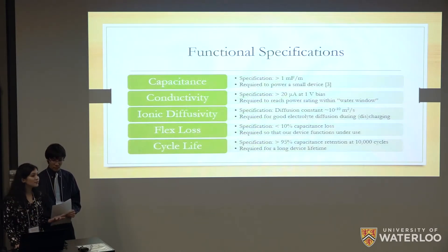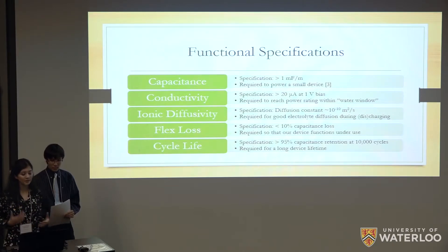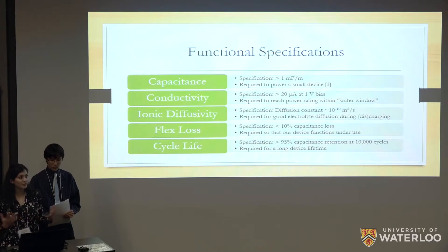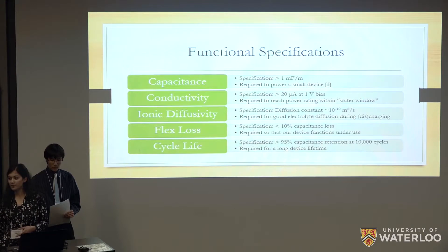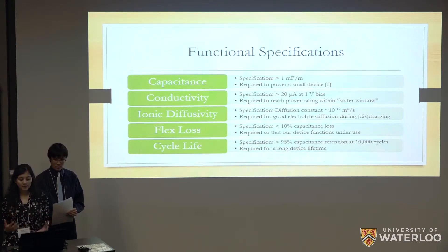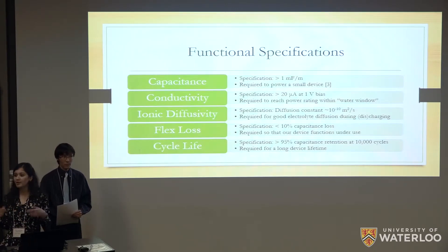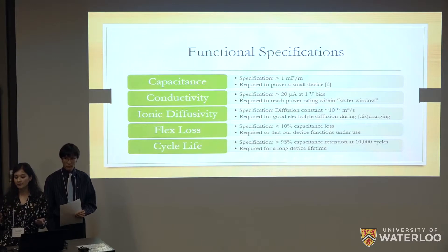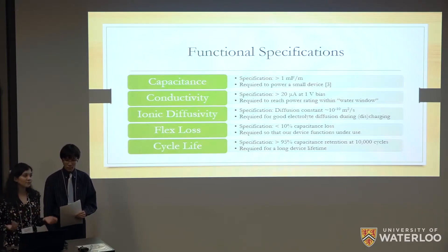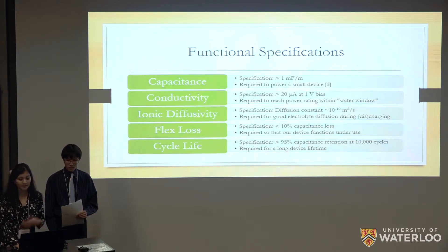In terms of functional specifications, our supercapacitor needs to have high capacitance and conductivity to power small devices like biosensors. They also need good enough ionic diffusivity so that charging and discharging can be fast. The flex loss should be minimum, meaning our supercapacitor needs to retain its performance under conditions like bending of the fiber. Also, the cycle life needs to be long enough so that it doesn't degrade quickly and lasts longer.